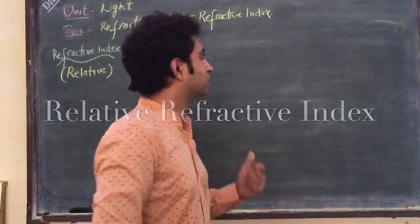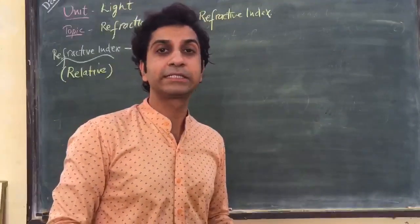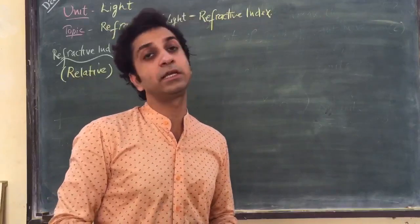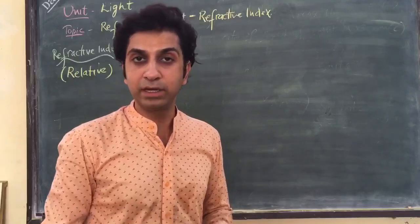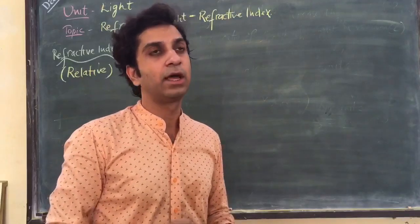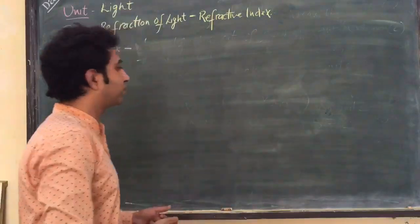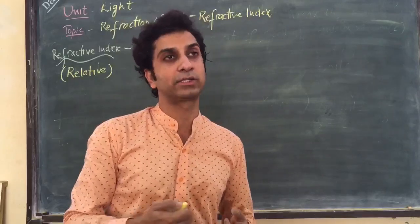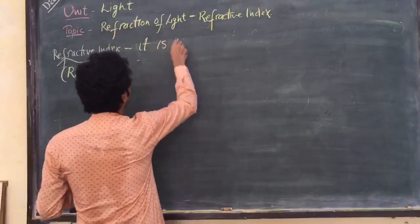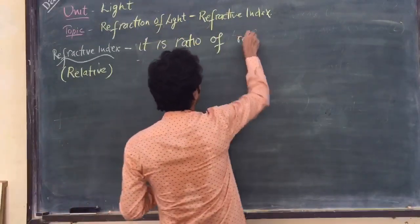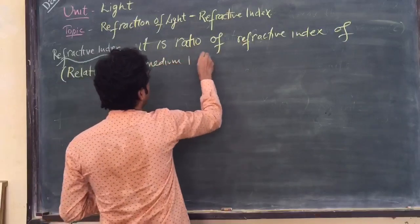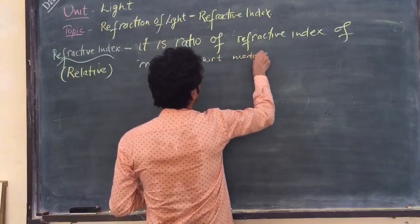Today we will discuss what is a relative refractive index. In my last lecture I discussed about the absolute refractive index, which is the comparison of the velocity of light in a given medium with respect to vacuum or free space. But relative refractive index is taken with respect to any two mediums. Whenever light goes from one medium to another — medium one to medium two — the refractive index of one medium with respect to the second is called the relative refractive index.